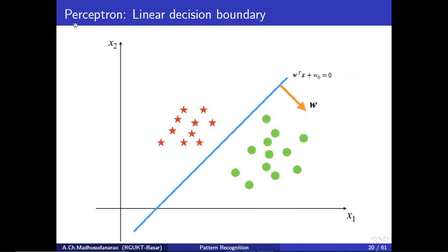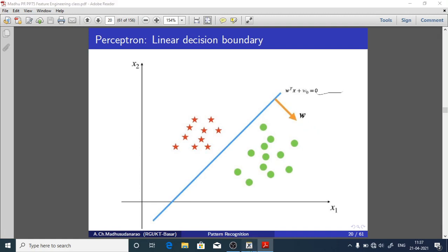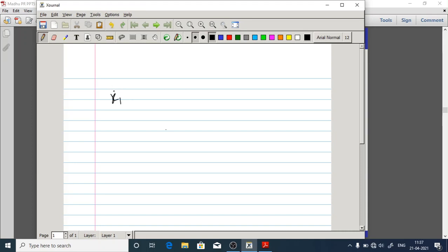We use the perceptron learning algorithm to learn these weights — w1, w2 — and bias w0. We need to learn these three parameters with the help of training data. The training data will have samples with features x1, x2, and the corresponding class label y. This is a classification task.